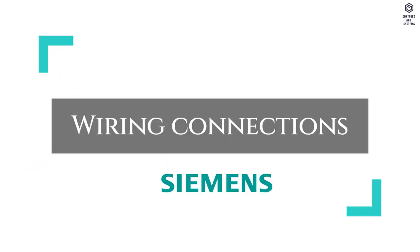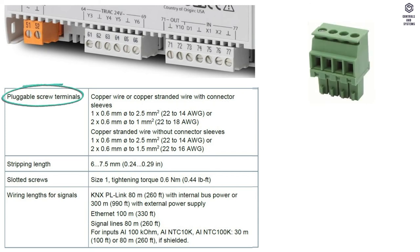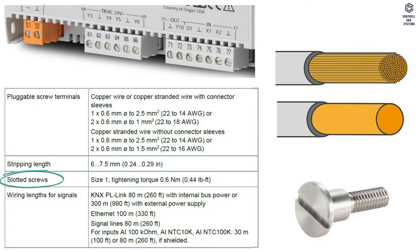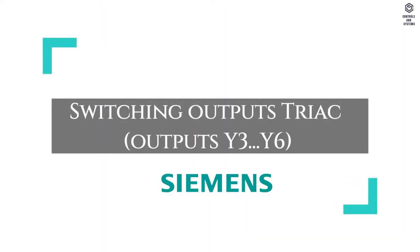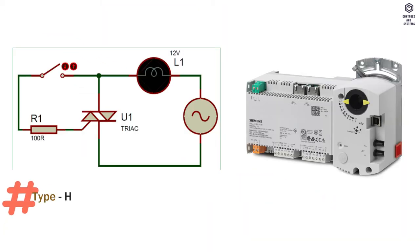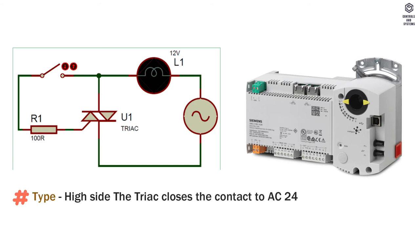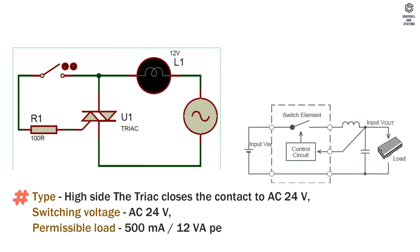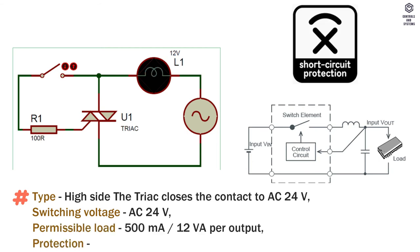Wiring connections: pluggable screw terminals use copper stranded wire without connector sleeves. Stripping length, slotted screws, and wiring lengths for signals are shown in the table. Switching outputs TRIAC: type is high side, and the TRIAC closes the contact to AC 24V. Switching voltage is AC 24V. Permissible load is 500 mA or 12 VA per output. Protection is short-circuit proof.